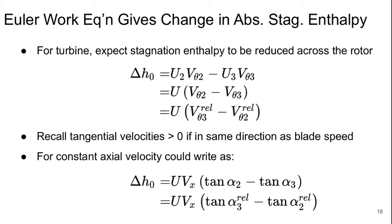We can quantify the change in absolute stagnation enthalpy across the rotor by looking at the change in absolute velocities. And we can actually write this using either v theta 2 minus v theta 3, or v theta 3 rel minus v theta 2 rel, and it's going to give us the same difference.